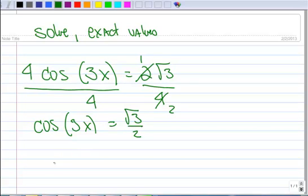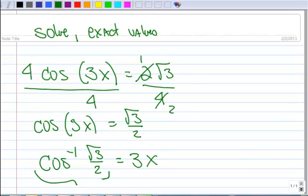Now I'm going to turn it into an inverse equation. This can be rewritten as the inverse cosine of square root of 3 over 2 equals 3x. And this says, where is the cosine of the square root of 3 over 2? And from your circle, you will find that that's pi over 6. So let's move up here. So pi over 6 is equal to 3x.